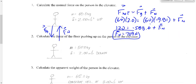Question 2 — the force of the floor pushing up on the person in the elevator. What are we really solving for? The normal force. The only difference here is that it's accelerating downward. We draw the free body diagram: force of gravity acting down, normal force acting up. Is normal force bigger or smaller than gravity? Smaller — because it's accelerating downwards. So we draw Fn a little bit shorter than Fg.